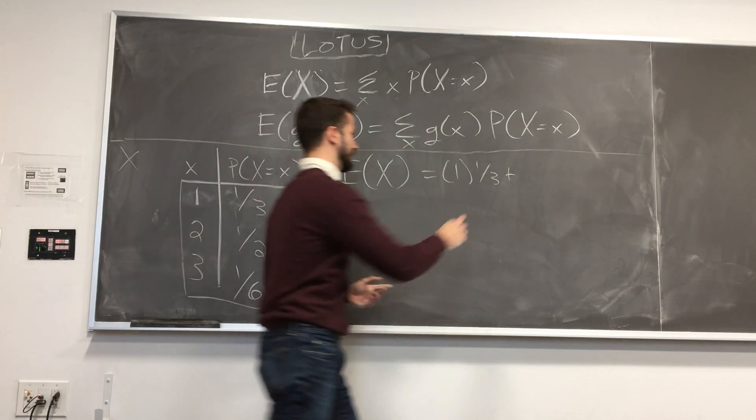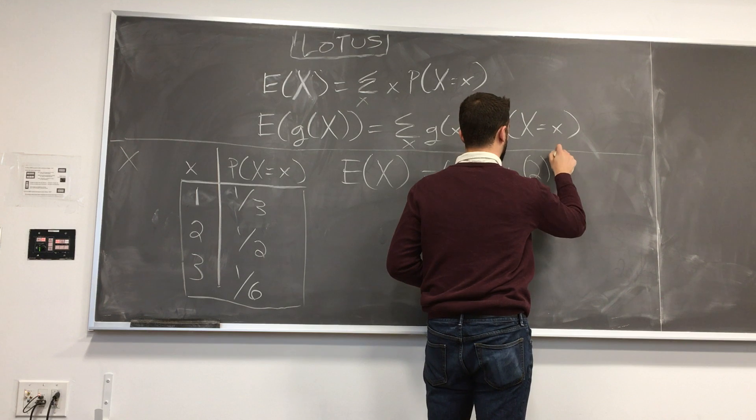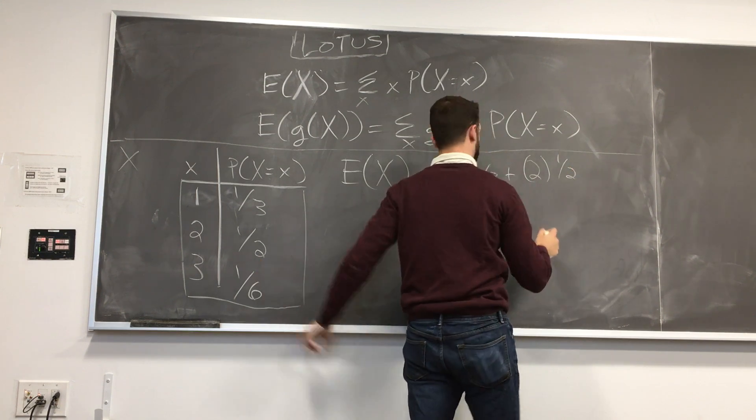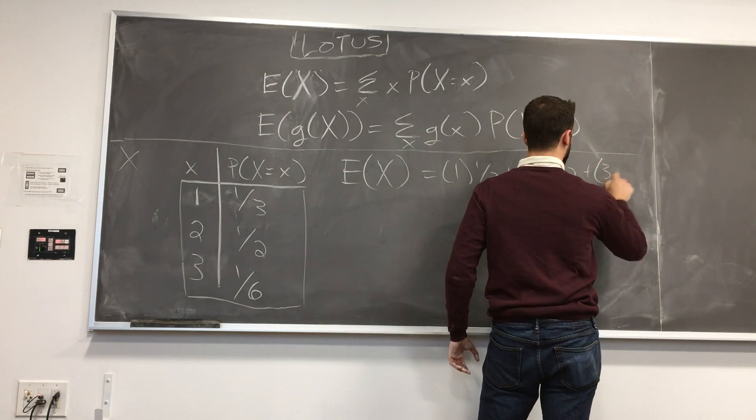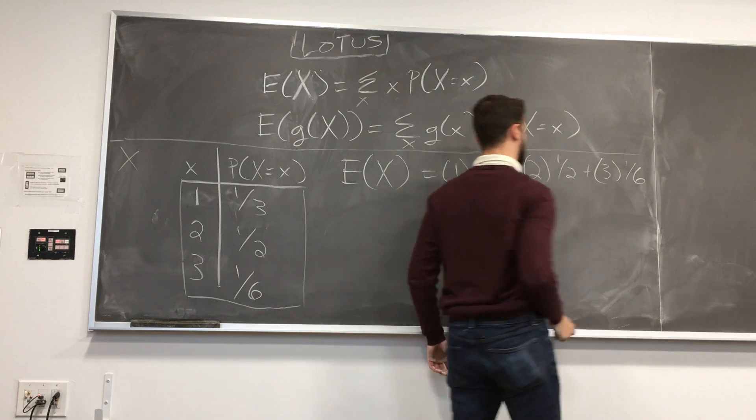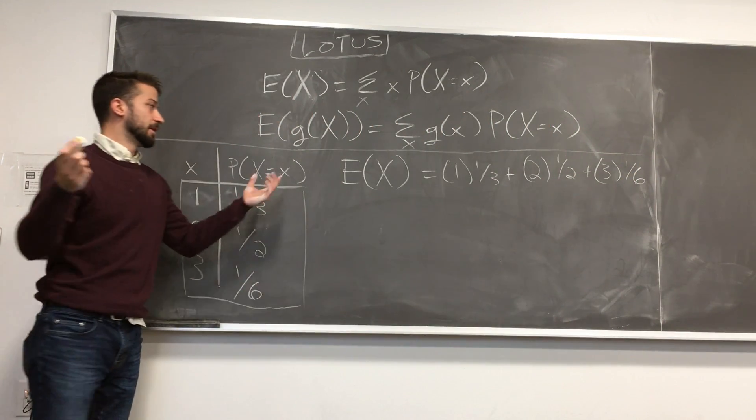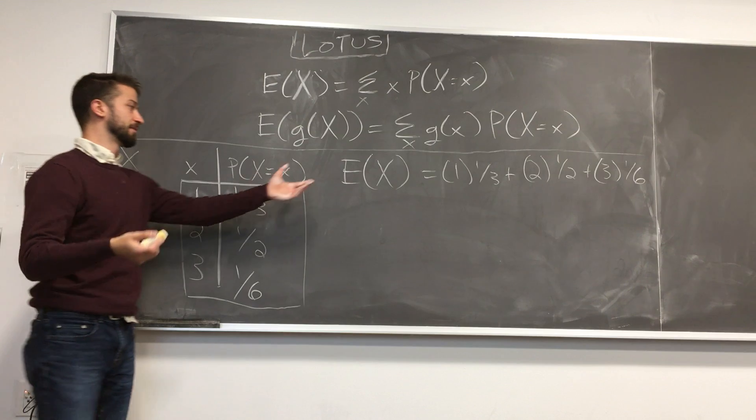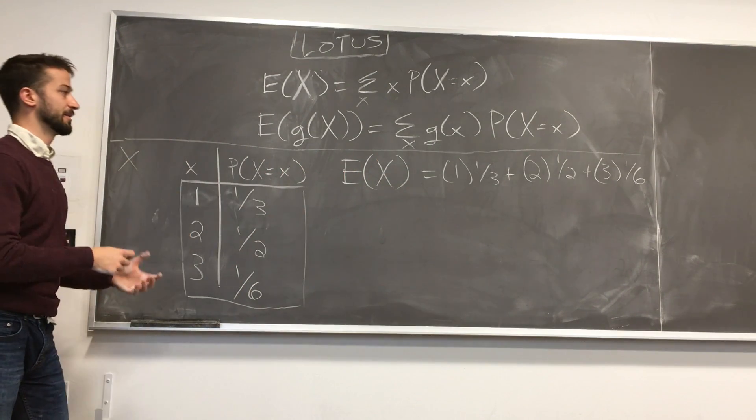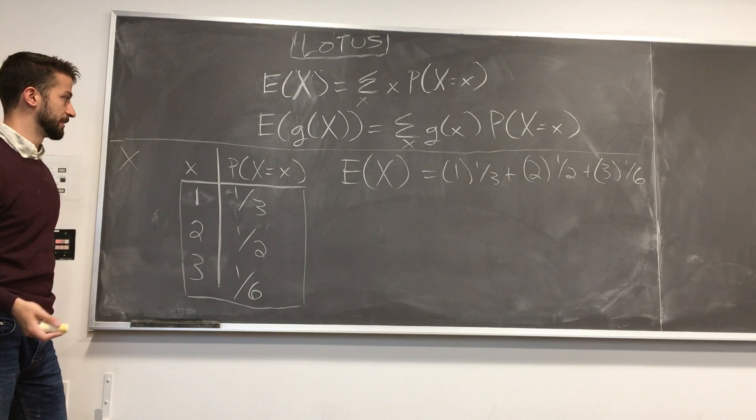And half the time, it's going to be 2. So I have 2 times a half. And then the rest of the time, one sixth of the time, it's going to be 3. Right? And that's very intuitive. It's a weighted average. Like, this percent of the time, it's going to take on this value, and so on from there.